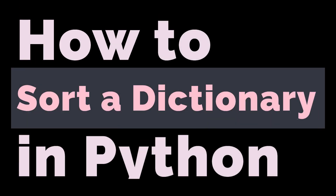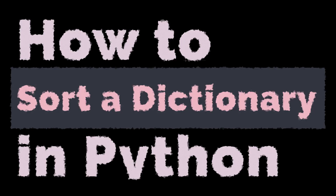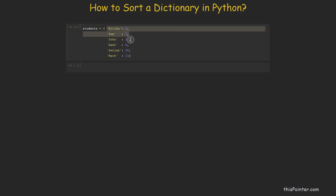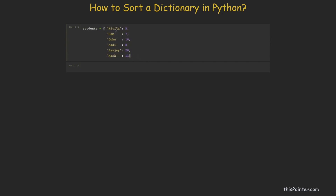In this video we will discuss how to sort a dictionary in Python. A dictionary in Python stores data as key-value pairs — in this example, keys are of string type and values are of integer type. We will first explore how to sort the dictionary by key, and then how to sort by value.